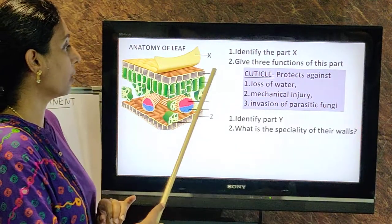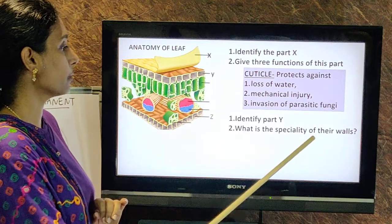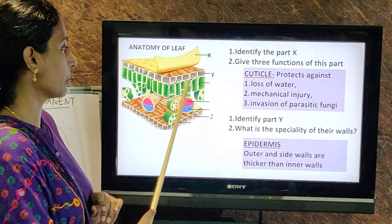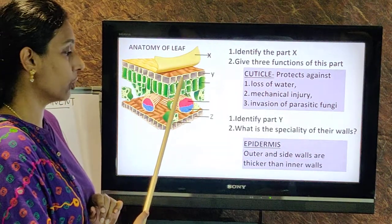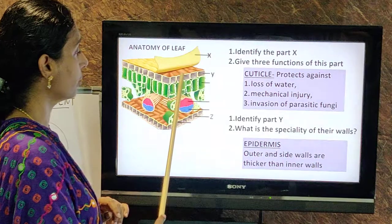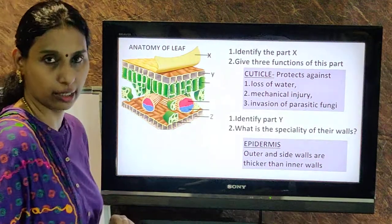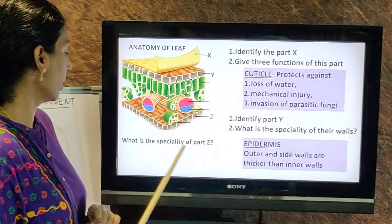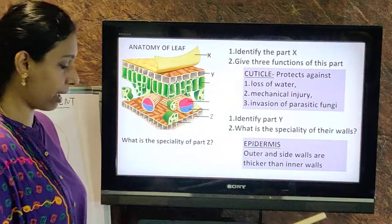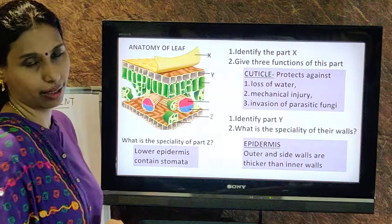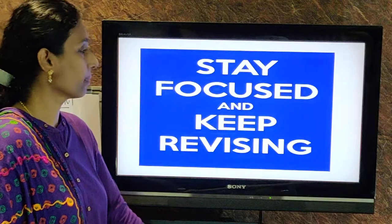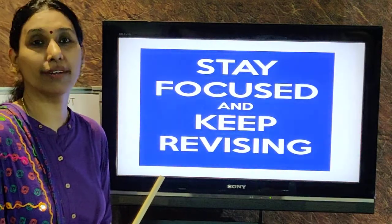Second question: identify part Y. Part Y is upper epidermis. What is the speciality of its walls? The outer and side walls are thicker, and the inner walls are thinner. Third question: what is the speciality of part Z? Part Z is the lower epidermis of the leaf — it has stomata. What is the function of stomata? Exchange of gases and transpiration. That's all, children. Stay focused and keep revising. Thank you, bye-bye.